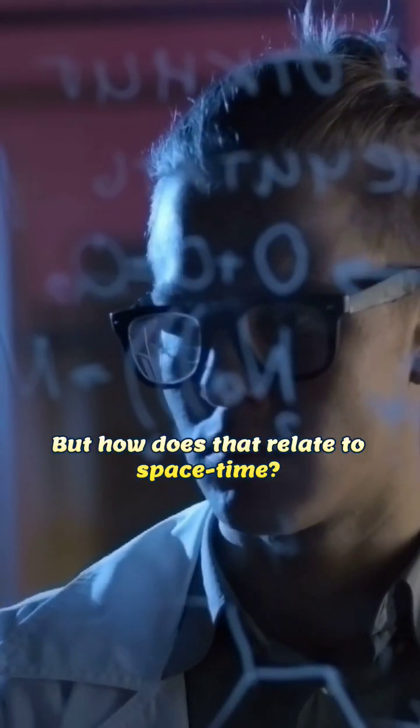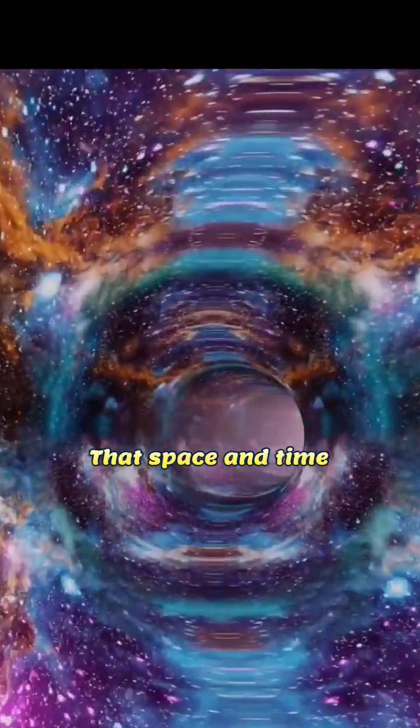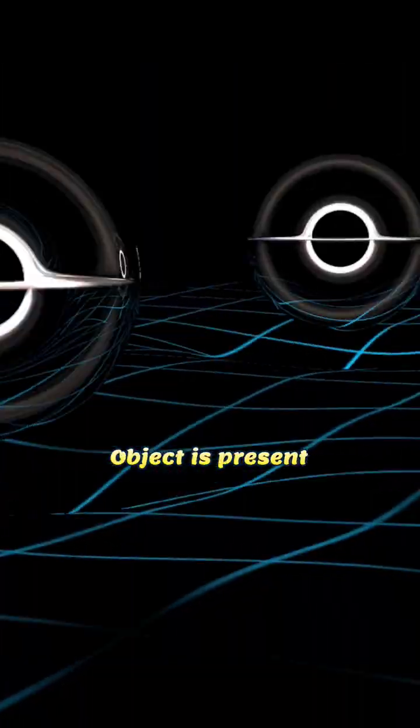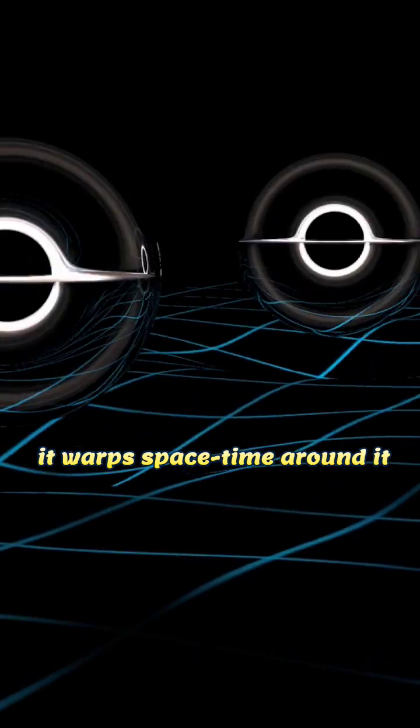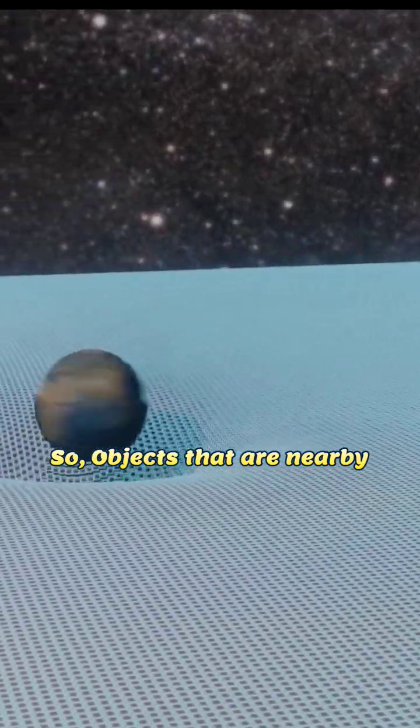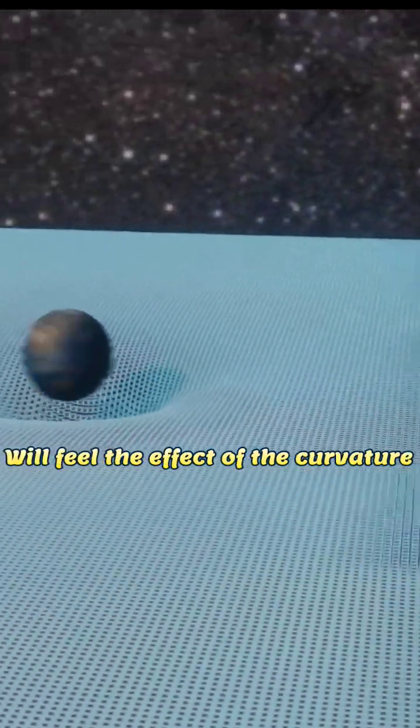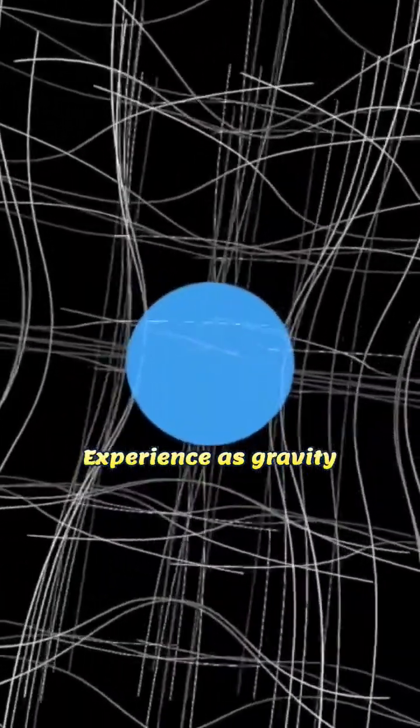But how does that relate to space-time? Well, Einstein believed that space and time are interconnected and when a massive object is present, it warps space-time around it. So, objects that are nearby will feel the effect of the curvature and that's what we experience as gravity.